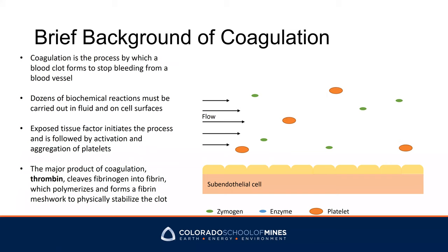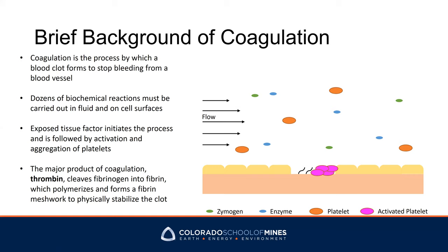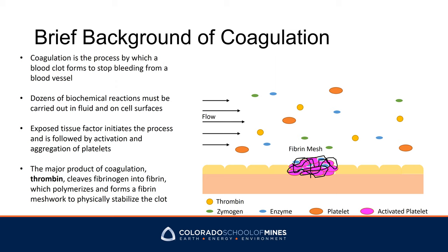Coagulation is a process involving a series of chemical reactions to form a clot to stop blood loss from vessels. The process initiates with exposure of tissue factor, followed by activation and aggregation of platelets and various coagulation factors. The end product, thrombin, will cleave fibrinogen into fibrin monomer, which polymerizes and forms a fibrin meshwork to physically stabilize the clot.